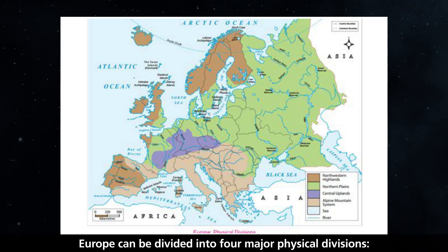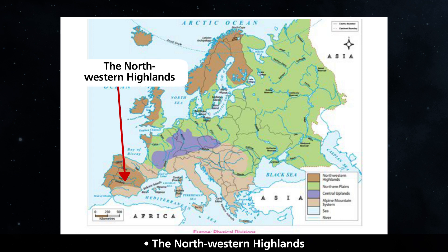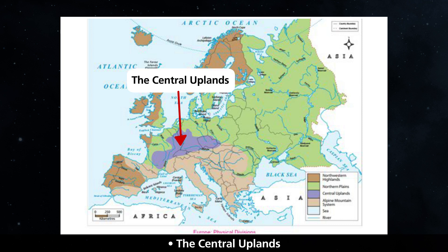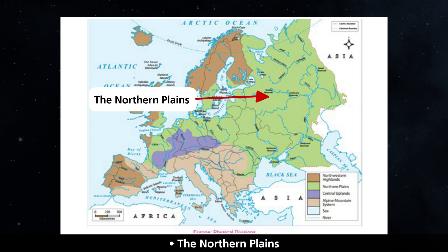Europe can be divided into four major physical divisions: the northwestern highlands, the alpine mountain system, the central uplands, and the northern plains.